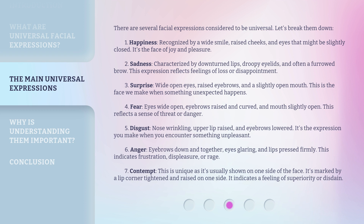5. Disgust — nose wrinkling, upper lip raised, and eyebrows lowered. It's the expression you make when you encounter something unpleasant. 6. Anger — eyebrows down and together, eyes glaring, and lips pressed firmly. This indicates frustration, displeasure, or rage. 7. Contempt — this is unique as it's usually shown on one side of the face. It's marked by a lip corner tightened and raised on one side, indicating a feeling of superiority or disdain.